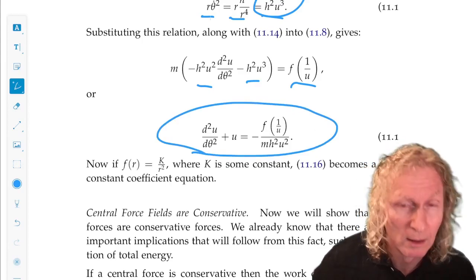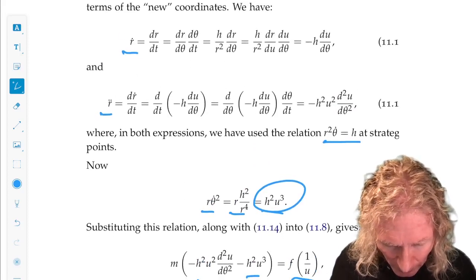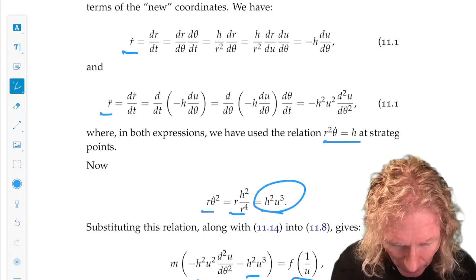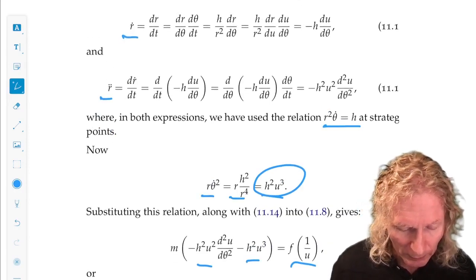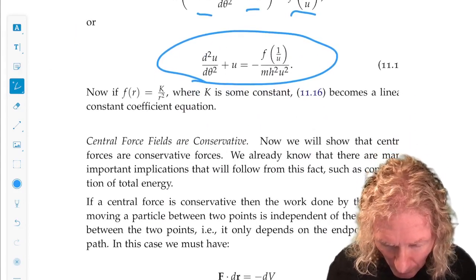Now, we're using theta as the new dependent variable. Dr dt is dr d theta d theta dt. There's a bit of calculus and algebra, but pretty straightforward, I think.